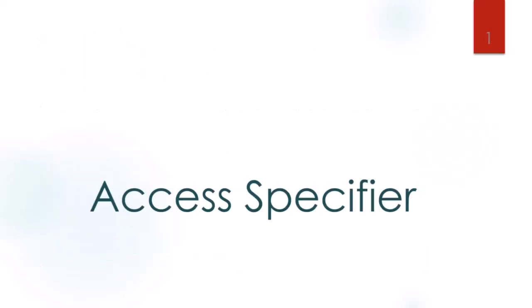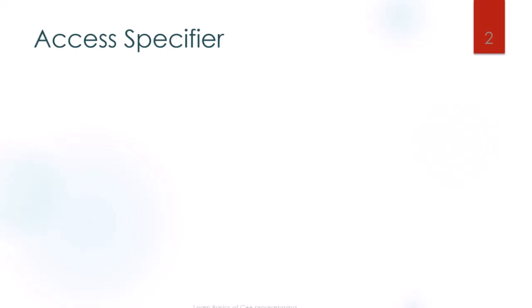The access specifiers define how to use data members declared with different access specifiers. In this lecture, we will be studying access specifiers for C++ classes with examples. Access specifiers are used before the declaration of data members and member functions. They are used to enforce restrictions on members of the class. There are three types of access specifiers: private, public, and protected.